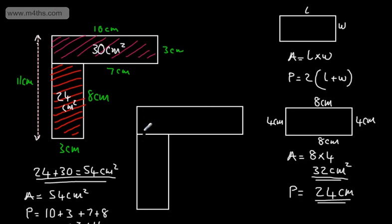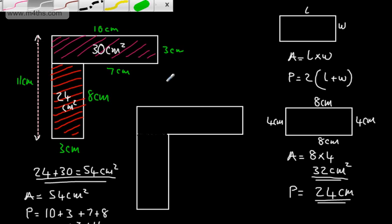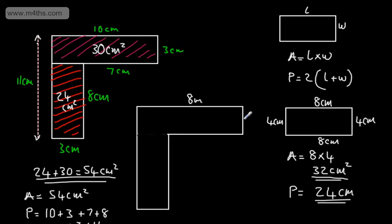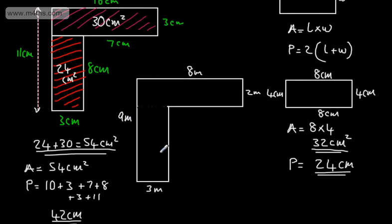Let's look at this second composite shape. Often they won't give us the dividing line and will just provide some dimensions: 8 metres, 2 metres, 3 metres, and 9 metres. Adding the missing lengths: if one side is 3 and the total is 8, the missing part is 5 metres. If the total height is 9 and one part is 2, the missing one must be 7 metres.